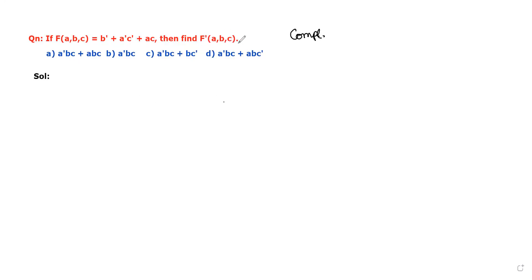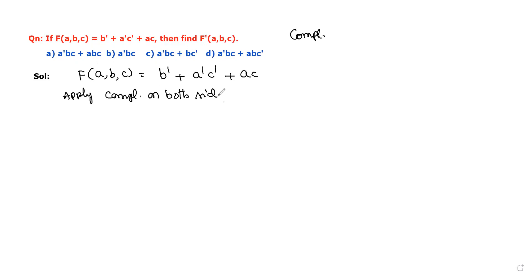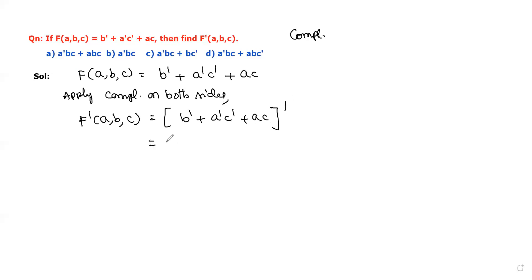To find f'(a, b, c), first take the given boolean function: f(a, b, c) = b' + a'c' + ac. Now apply complement on both sides: f'(a, b, c) = (b' + a'c' + ac)', which we solve using De Morgan's laws.